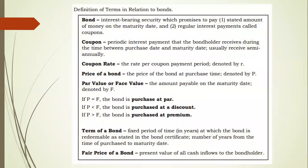Definition of terms in relation to bonds. Bond is an interest-bearing security which promises to pay a stated amount of money on the maturity date, and regular interest payments called coupons. Coupon is the periodic interest payment that the bondholder receives during the time between the purchase date and maturity date, usually received semi-annually. Coupon rate is the rate per coupon payment period, denoted by R.